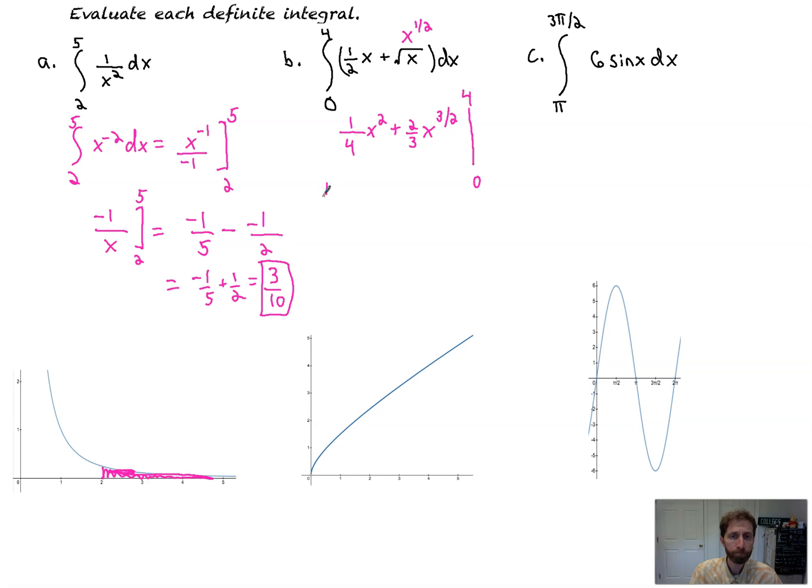All we got to do is plug in four. That's one-fourth, I'll put a parenthesis here to group things. One-fourth times four squared is 16, plus plug four into here. The square root of four is two, cubed is eight, times two is 16, and then we got thirds.